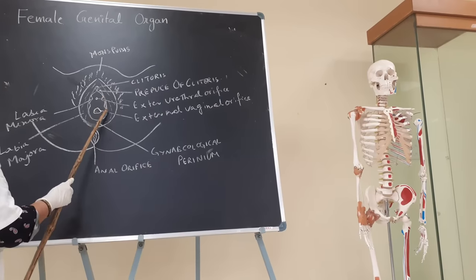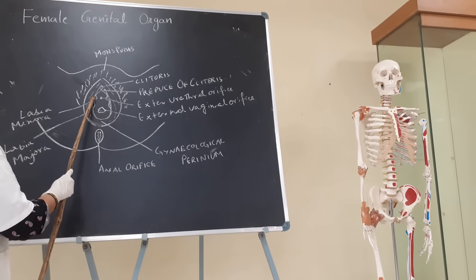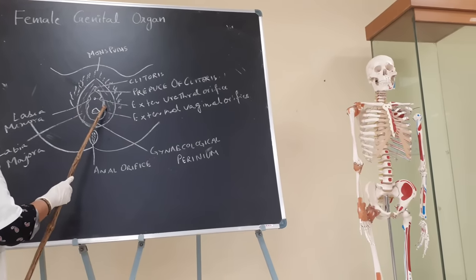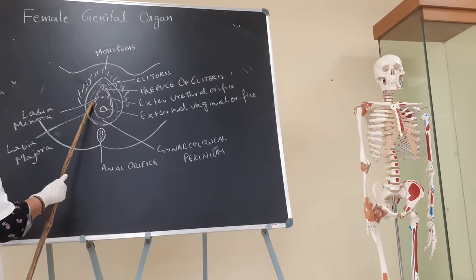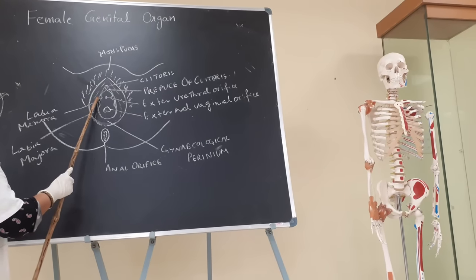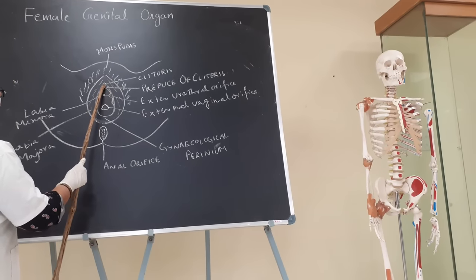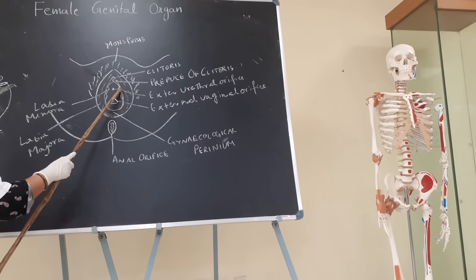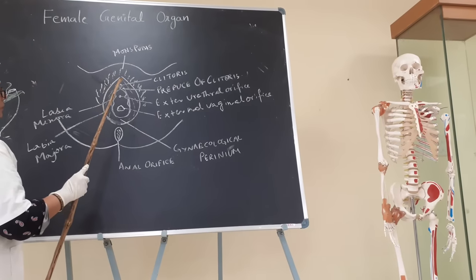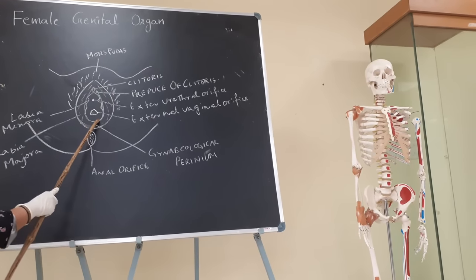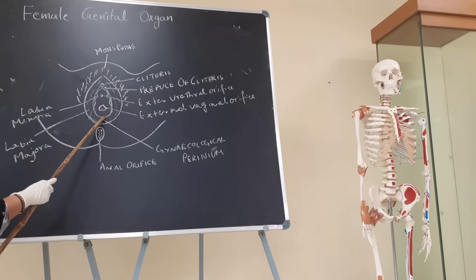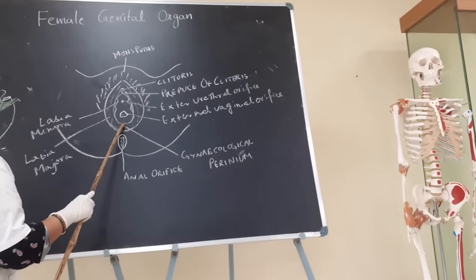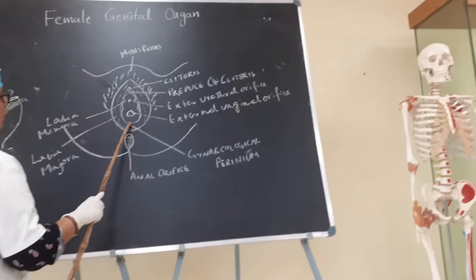Below the labia minora on both sides lies another erectile tissue called the bulb of the vestibule. The bulb of the vestibule is continuous with the glans or tip of the clitoris. They are invested by the bulbospongiosus muscle. Posteriorly, the two skin folds of labia minora unite and form the posterior frenulum of the minora, also called the fourchette.